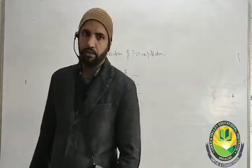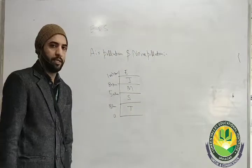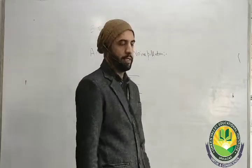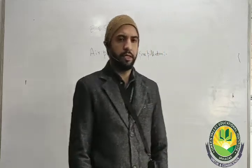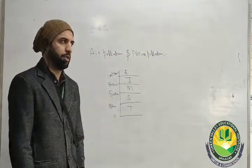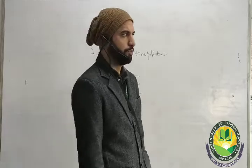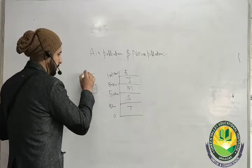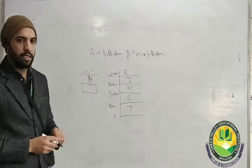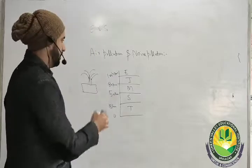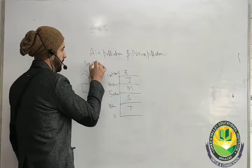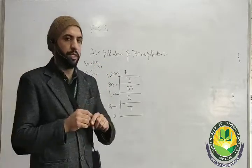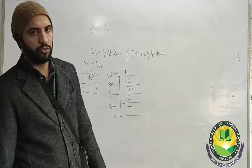There are different causes of air pollution. For example, industries emit smoke which comes directly into the atmosphere and causes air pollution. This smoke contains SO2, NO2, and carbon monoxide, which come directly in contact with the atmosphere and cause air pollution.